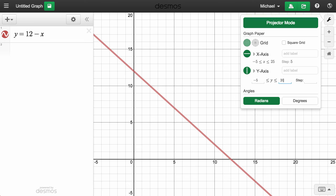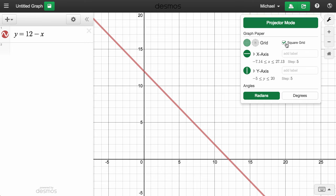If you'd like to set your axes with the same scale, just click square grid and we'll make it happen, automatically.